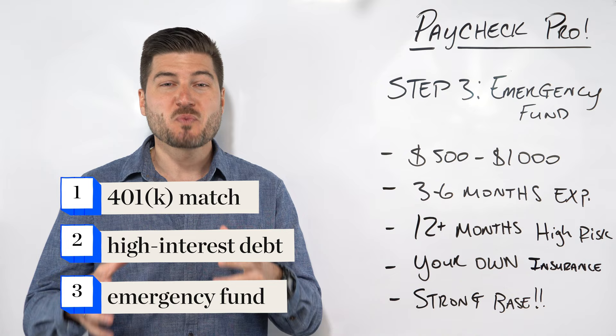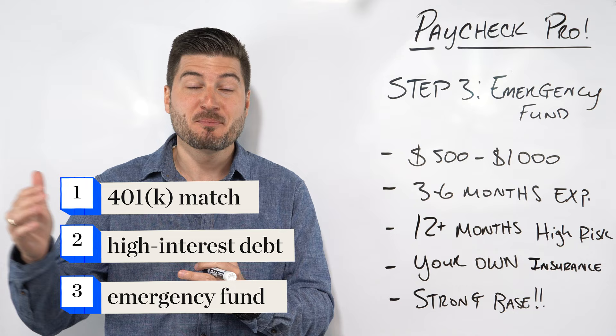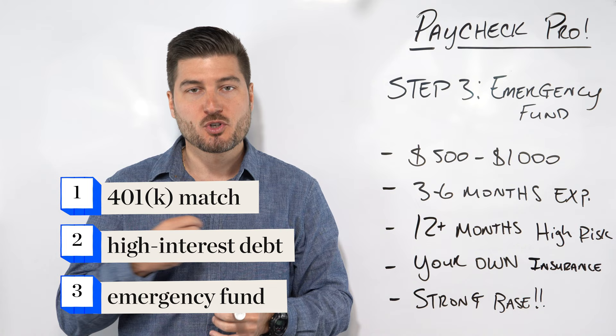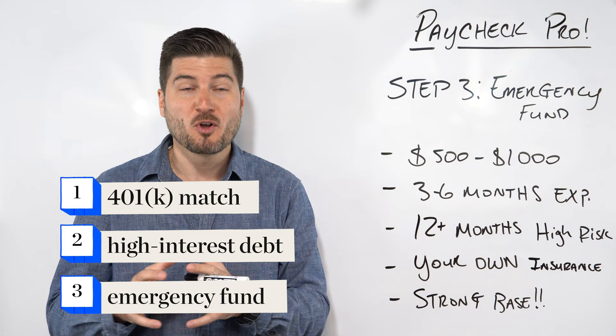So this is why these three steps in order are in the order in which they are. Because having too much cash in an inflationary environment is a losing proposition. However, when it comes to emergency reserves, this is almost a non-negotiable in my opinion. So once you do reach that three to six months, you need to start investing for retirement and overall wealth building, which we'll get into in step number four.